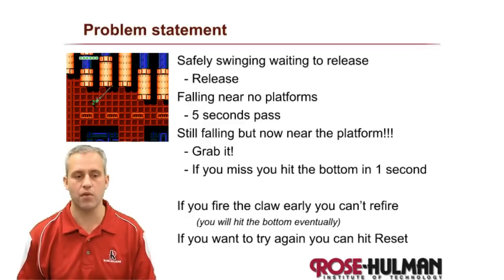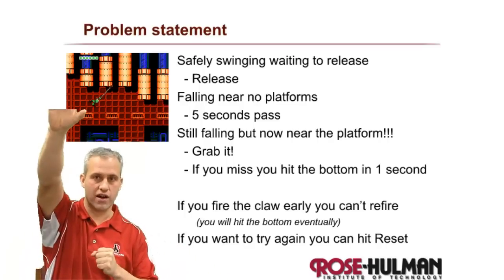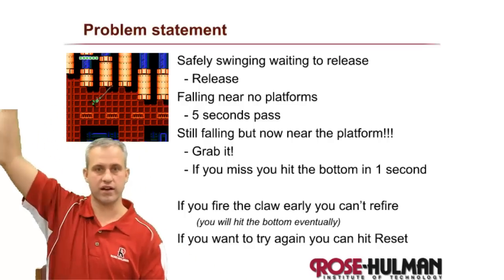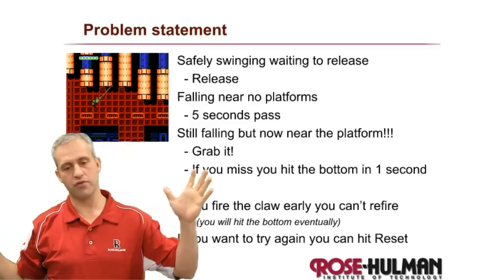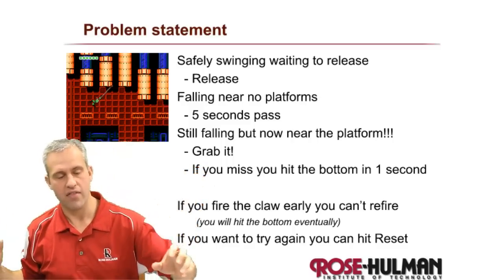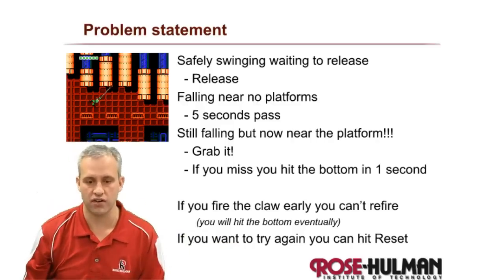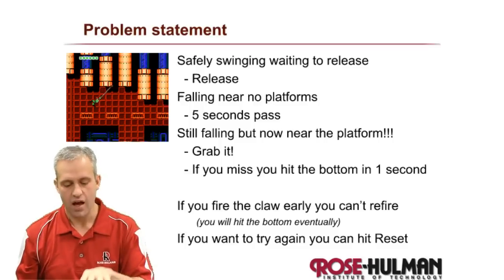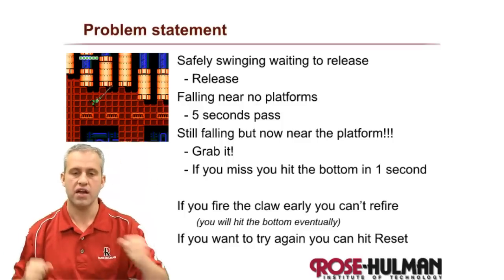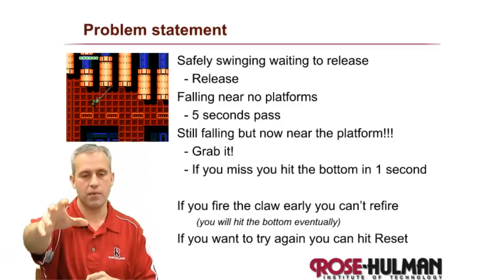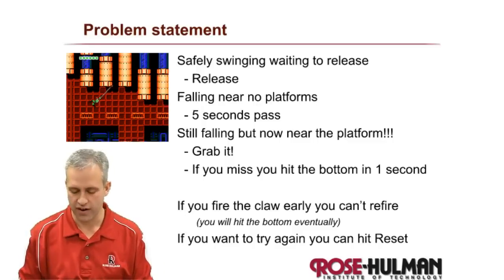The problem we're going to do is one of the things you'd have to do in this game all the time — you would swing like Tarzan with your grappling hook. You'd fire it, grab something, and safely be swinging. But sometimes you had to let go and fall through the air, then at just the right moment fire the grappling hook and grab a platform to save your life. If you didn't fire in time you'd hit the bottom of the screen, and if you fired too early the grappling hook needed time to recharge and you'd fall anyway.